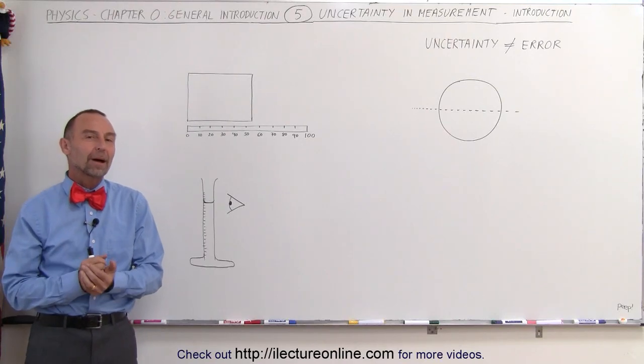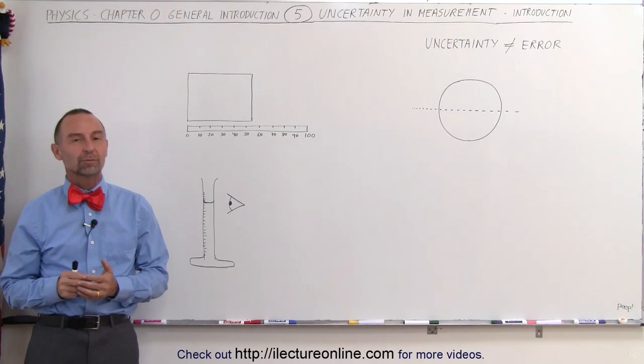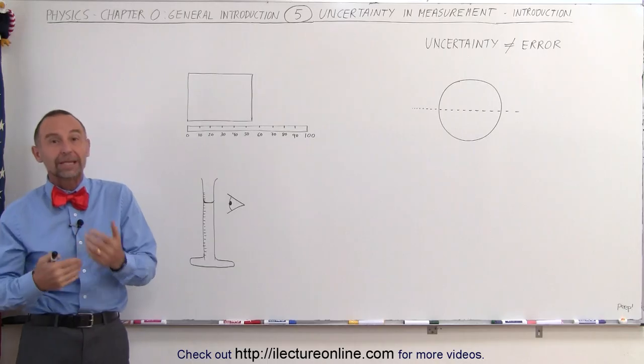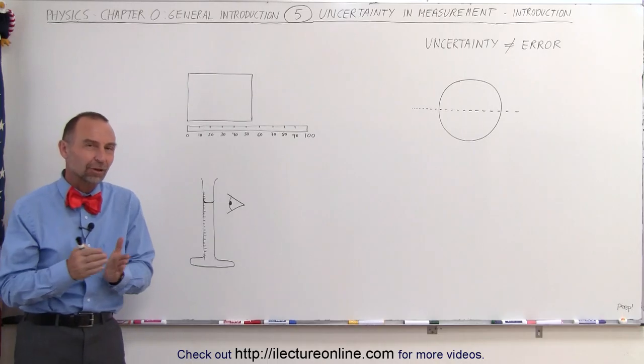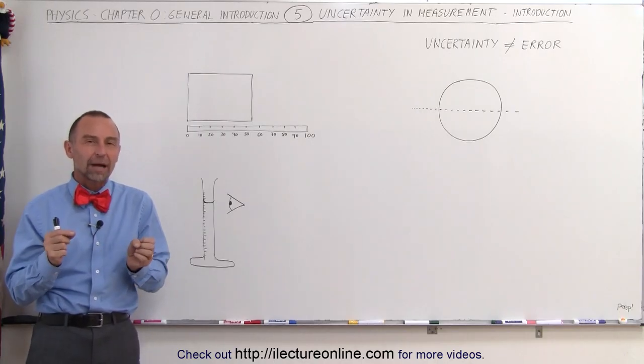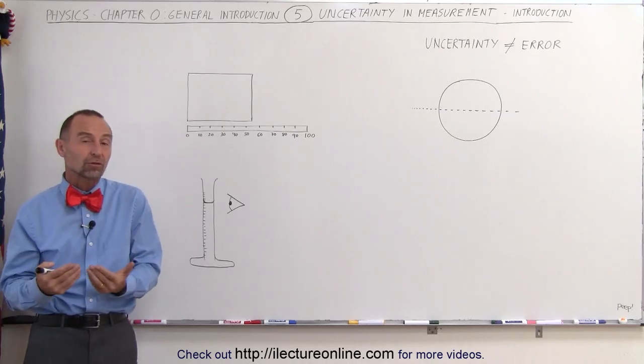Welcome to iLectureOnline. Now let's talk about the uncertainty in measurement. In physics, a lot of the numbers that we come up with in order to manipulate them, in order to come up with the correct answer in our problems, the numbers that were derived were usually measurements, and we have to talk about how accurately we can take those measurements.